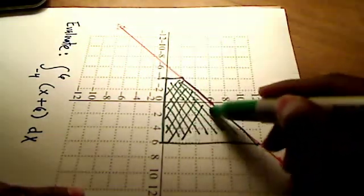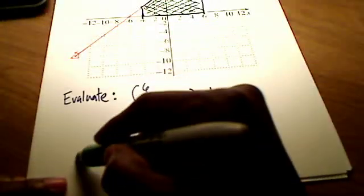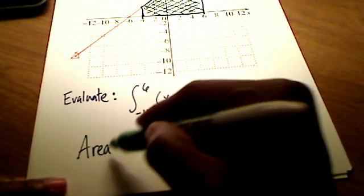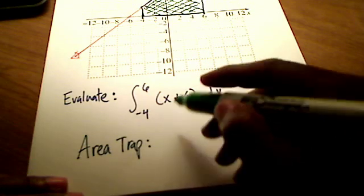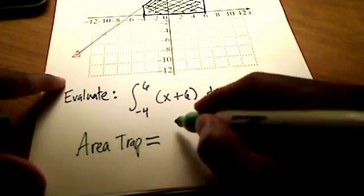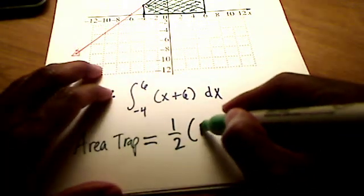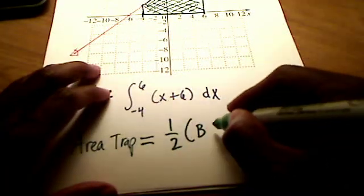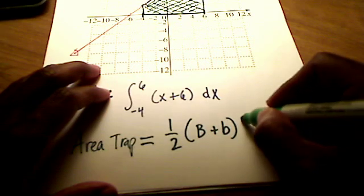All of this shaded area is simply a geometric shape called a trapezoid. And the way that trapezoids work is you can find the area of a trapezoid, I'll write this right here, area of a trapezoid, by taking 1/2 the sum of the two bases. Now I'm going to put big B and little b for big base and little base, times the height of this trapezoid.